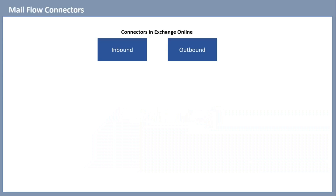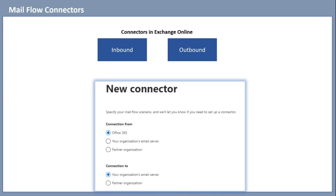Mailflow Connectors are used to control the way emails flow to and from a Microsoft 365 organization. In Exchange Online, there are two types of Mailflow Connectors: inbound and outbound. We can create multiple types of connectors in Exchange Online.